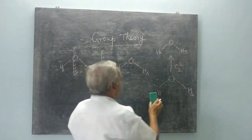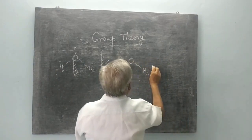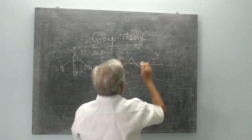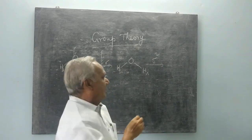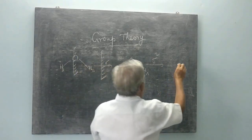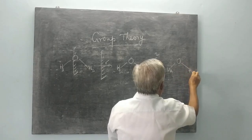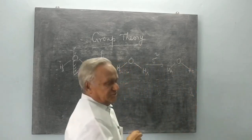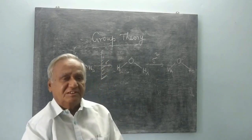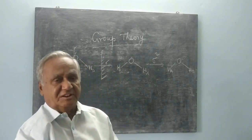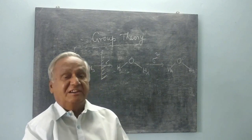If I do the reflection again, I call it sigma-2 — reflecting twice. What I get is A comes back here and B comes back here: an identical structure. So sigma-1 produces an indistinguishable structure and sigma-2 produces an identical structure.